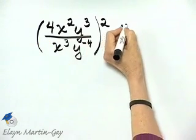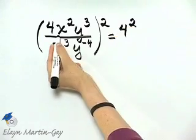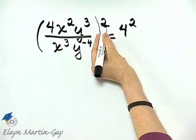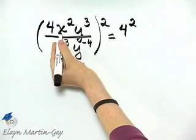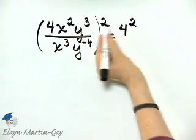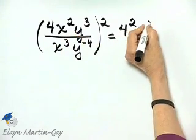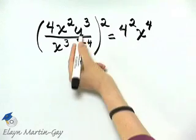So that is 4 squared. It is x squared squared. Remember that's a power of a power so we multiply x to the power of 2 times 2 or x raised to the power of 4.